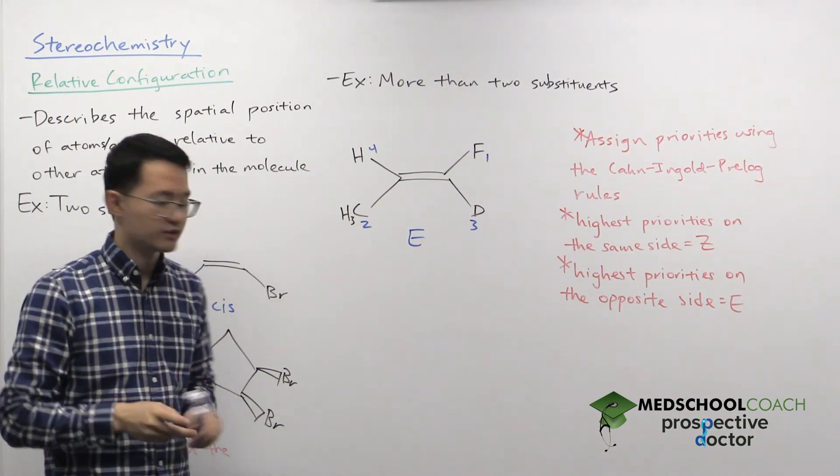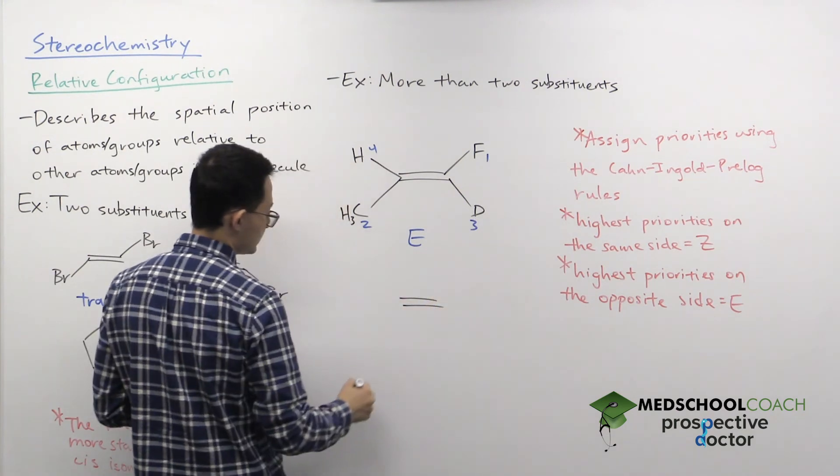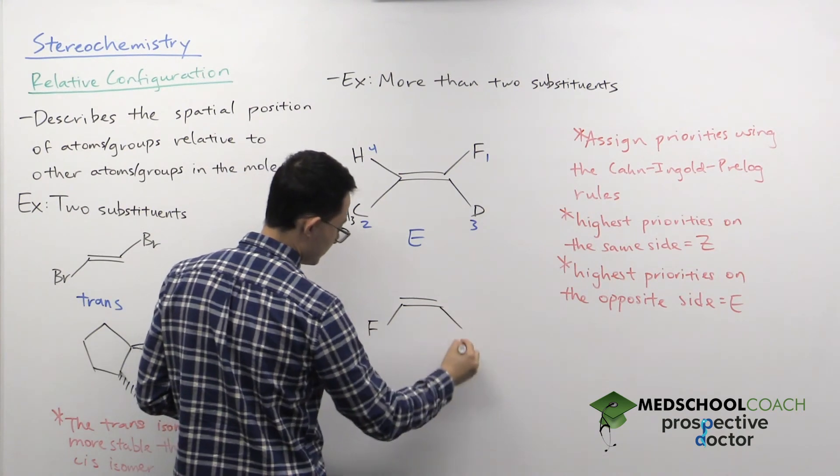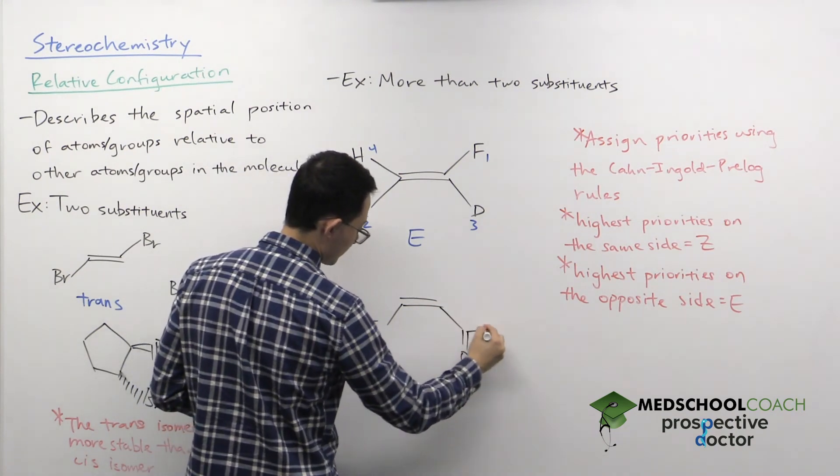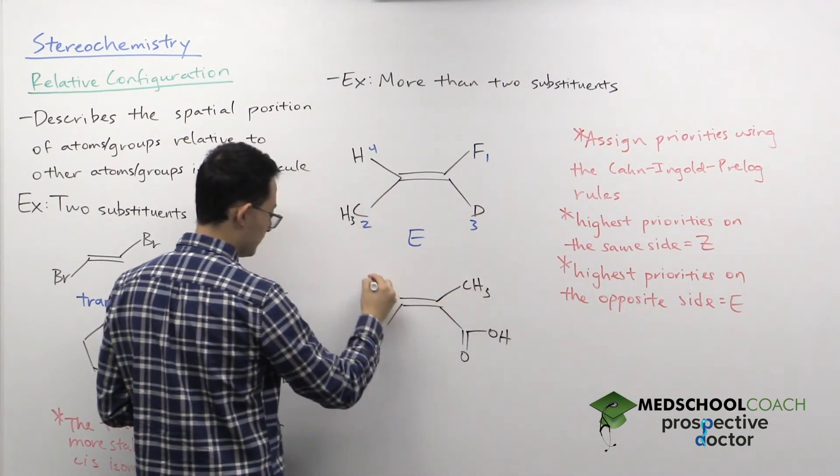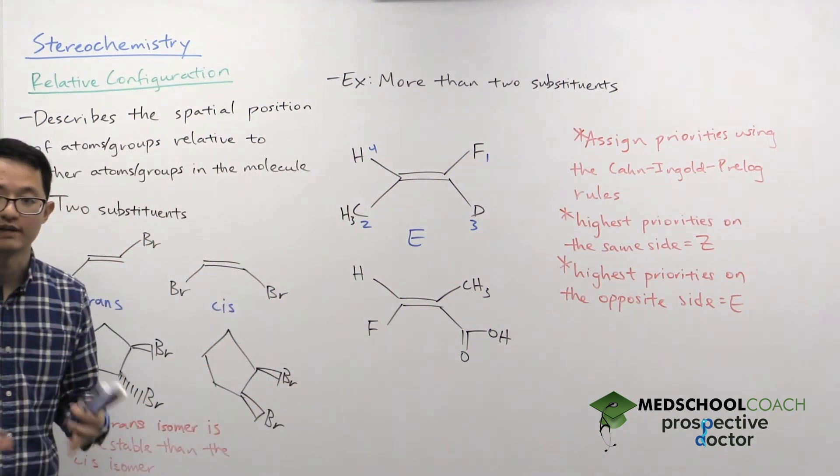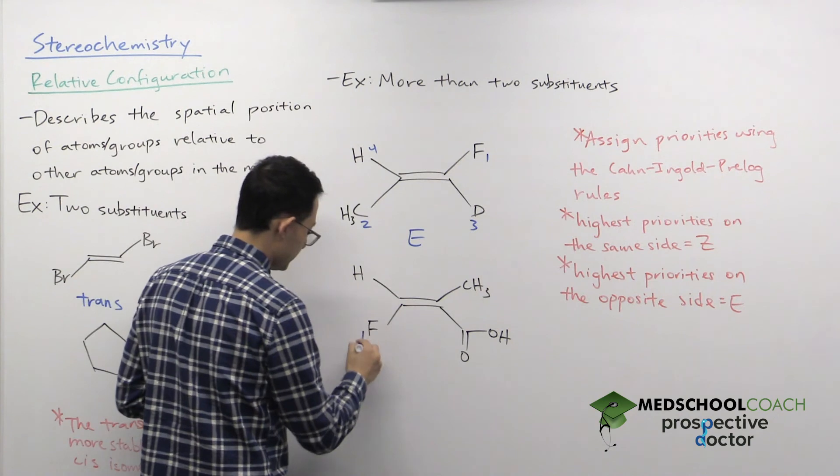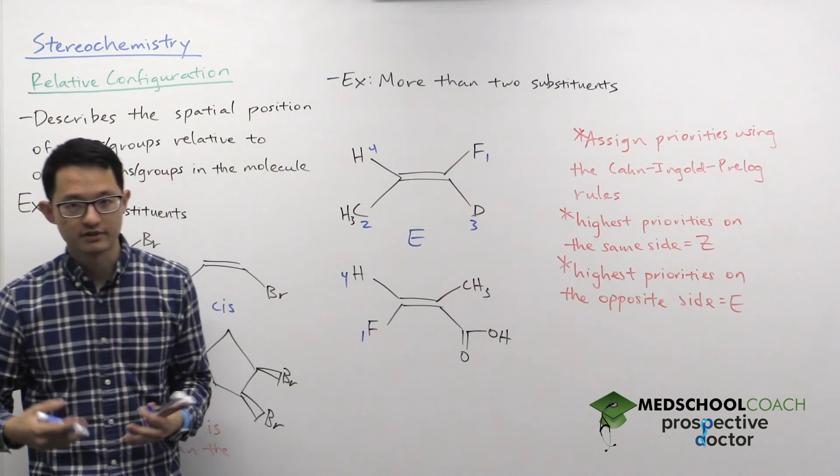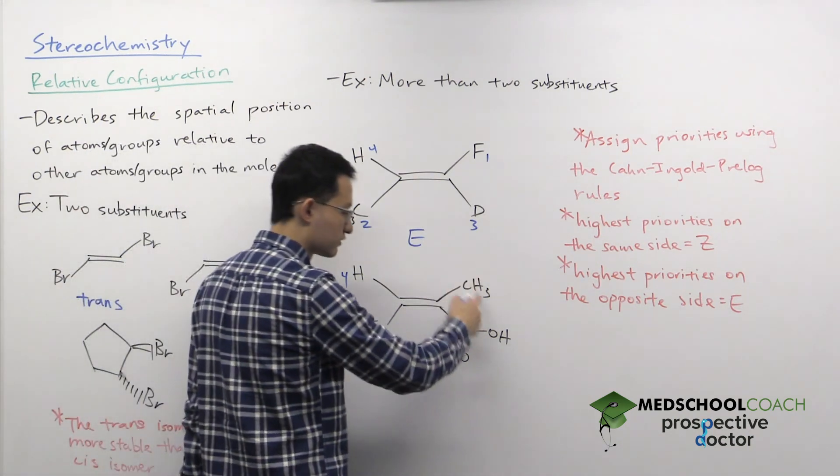We can take a look at another molecule, which is going to give us a Z, and that could be a molecule like this. All right, so if we take a look at this molecule, we can rank by atomic number. Fluorine is number one, hydrogen is number four. We've got two carbons, same atomic number, same atomic mass. We've got to find the first point of difference. This carbon is bound to three hydrogens.